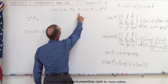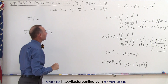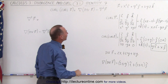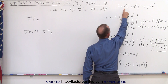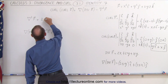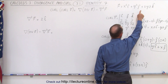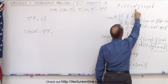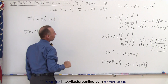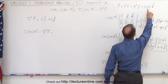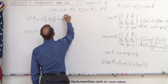Now we need to use the Laplace operator operating on the vector field. We take the second derivative of the first component with respect to X: the first derivative is 2X, the second derivative is 2, so it's 2 in the I direction. For the second component, the second partial derivative with respect to Y of 2Y gives 2, so plus 2 in the J direction. For the third component, the second derivative with respect to Z gives 0, so plus 0 in the K direction.